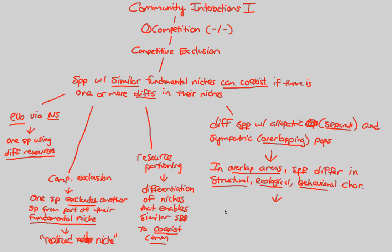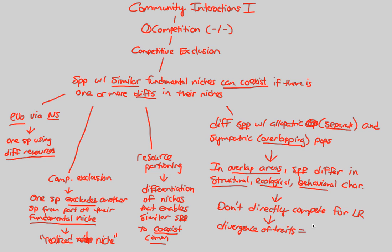Because there are differences in these critical evolutionary components, we get divergence. These individuals don't directly compete for limiting resources, and so there will ultimately be a divergence of traits — what we call character displacement in community ecology. Characters look, act, and are different from those of similar species with similar fundamental niches, simply because of a lack of direct competition and differences in structure, ecology, or behavior within overlapping areas.